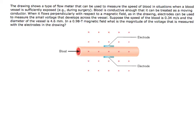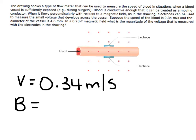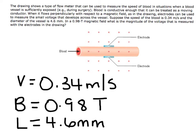In this problem, you're given the speed of the blood running through the vessel, which is 0.34 meters per second. And you're also given the B field or the magnetic field, which is 0.98 tesla. And lastly, you're given the diameter of the vessel, or L, which is 4.6 millimeters, or if you want to convert it to meters, 0.0046 meters. So, this is your given.